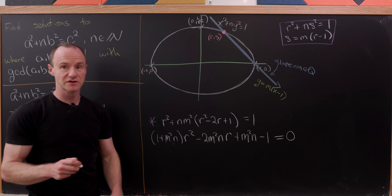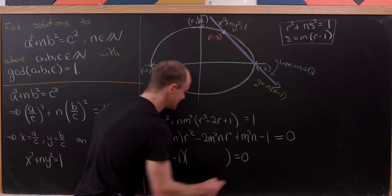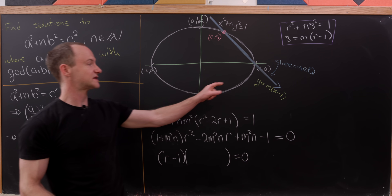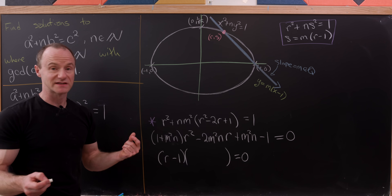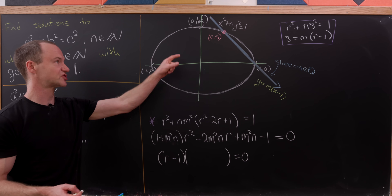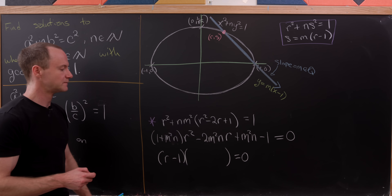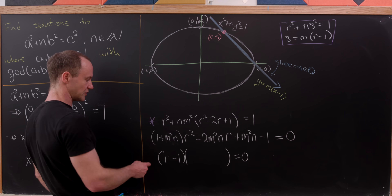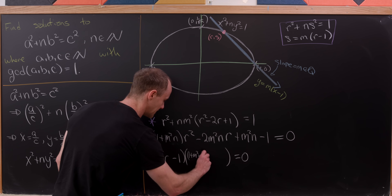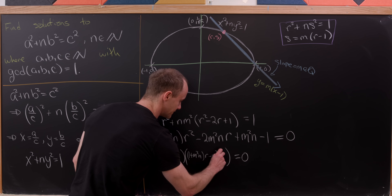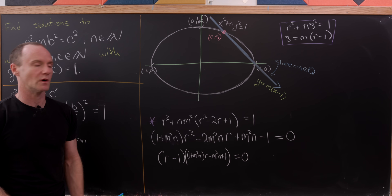This might seem hard to factor, but we know that r = 1 is always a solution because (1, 0) lies on both the ellipse and the line. So we can factor out (r − 1) to find the other root. The factorization gives (1 + nm²)r − (nm² + 1) as the other factor, which you can verify by expanding.